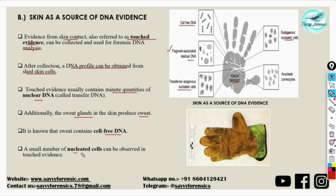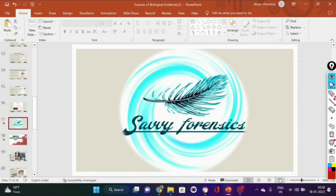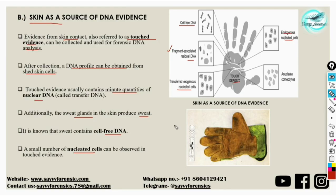A small number of nucleated cells can also be observed in touched evidence, deposited through various ducts like sweat and sebaceous ducts. Through these sources we can get DNA evidence, do DNA analysis, and make an identification. If other sources of evidence are not present at the scene of crime, we can extract trace evidence from the skin itself. For example, a hand glove found at a scene of crime may belong to a perpetrator and contain shed skin cells deposited on the worn clothing, which acts as potential evidence for DNA analysis.